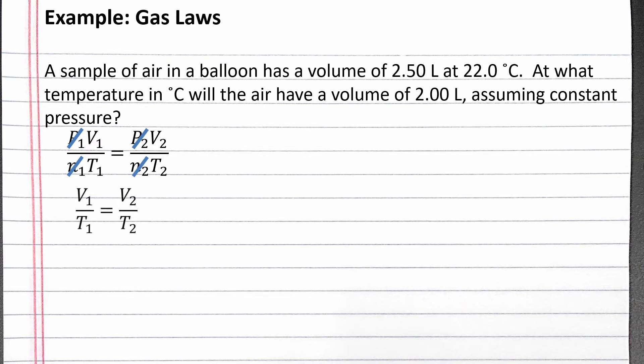This leaves V1 over T1 equals V2 over T2, which is Charles' law.